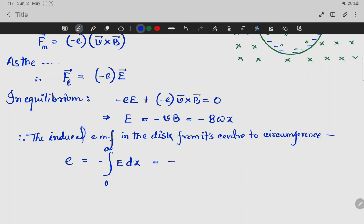So minus, and we have to integrate from 0 to A, from the center to circumference. So we have B omega x dx, that means x square by 2, that means half B omega a square.